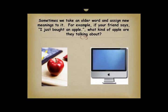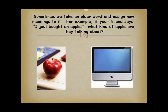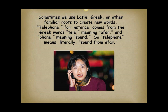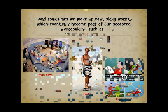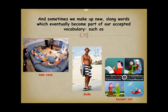Sometimes we take an older word and assign new meanings to it. For example, if your friend says, 'I just bought an apple,' what kind of apple are they talking about? Sometimes we use Latin, Greek, or other familiar roots to create new words. Telephone, for instance, comes from the Greek words tele meaning afar, and phone meaning sound — so telephone means literally sound from afar. Sometimes we even combine two words to make one new more descriptive word: brunch is a combination of breakfast and lunch, smog is a combination of smoke and fog. And sometimes we make up new slang words which eventually become part of our accepted vocabulary, such as man cave, dude, bucket list.